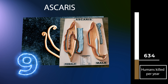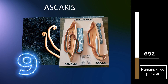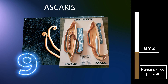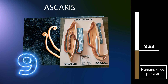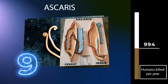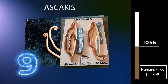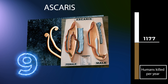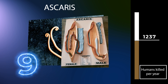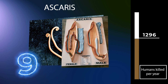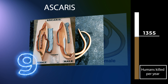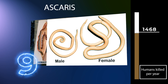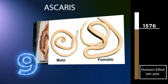Other Ascarid genera infect other animals, such as Parascaris equorum, the equine roundworm, and Toxocara and Toxascaris, which infect dogs and cats. Their eggs are deposited in feces and soil, and plants with the eggs on them infect any organism that consumes them.